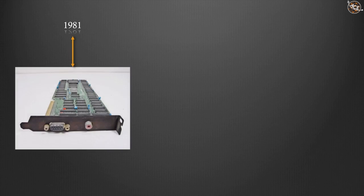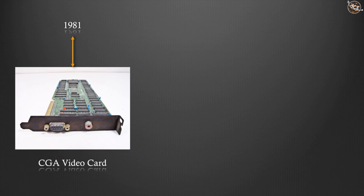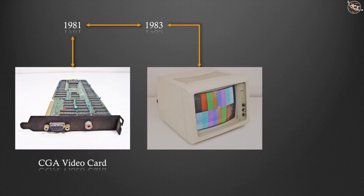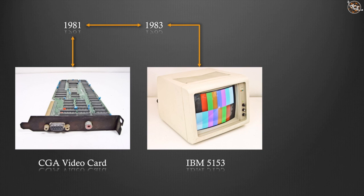In 1981, IBM introduced the first color display standard for IBM PC, called Color Graphics Adapter, or CGA. The CGA was designed to have a 16 color palette and different graphics and text modes. After two years, in March 1983, IBM introduced the first computer color display, the IBM 5153, designed specifically for CGA.